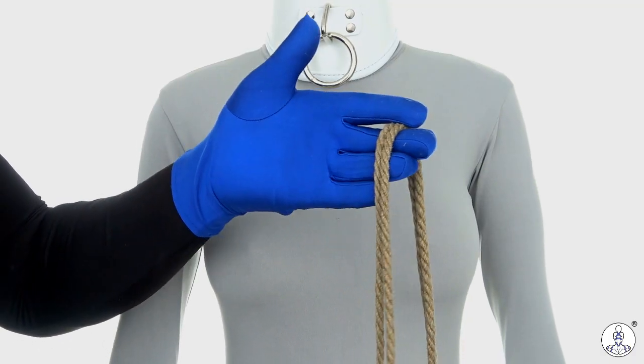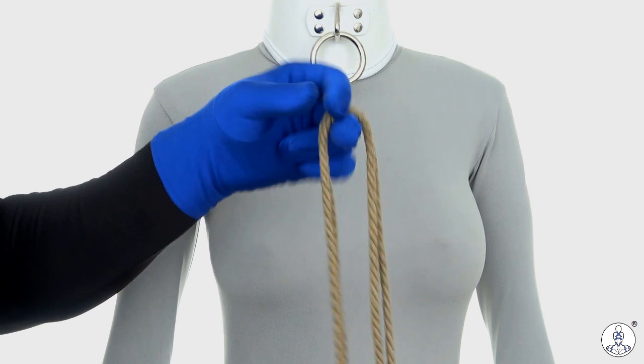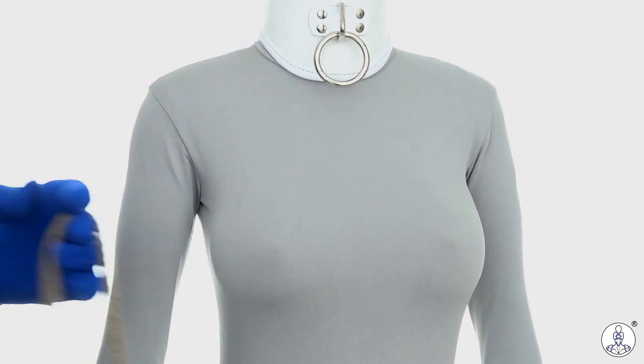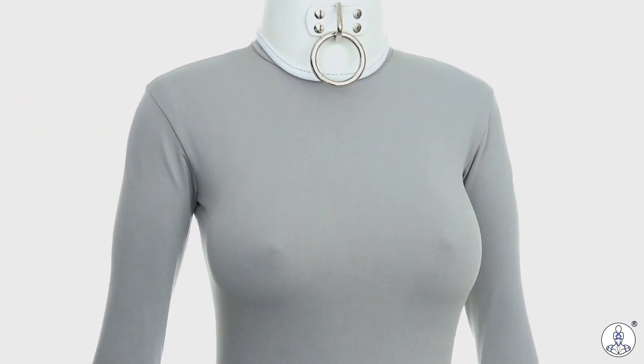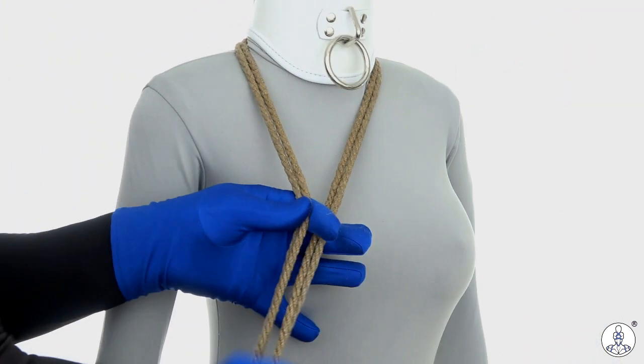The first thing we need to do is get two ropes. These are approximately 15 feet, approximately 5 meters long. Find the center of them, the bite, and place that bite at the back of your partner's neck and then bring the two strands across to the front.